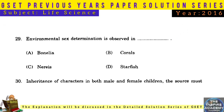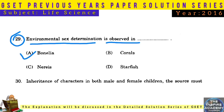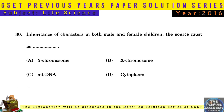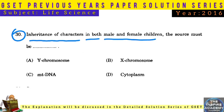Question No. 29: Environmental sex determination is observed in Bonellia. Question No. 30: Inheritance of characters in both male and female children — the source must be mitochondrial DNA.